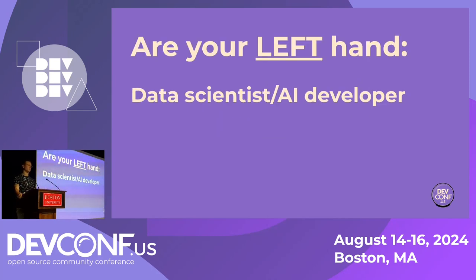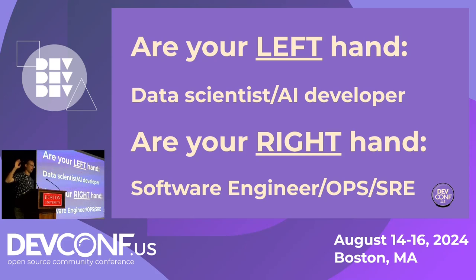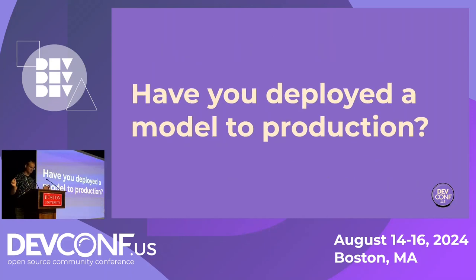Raise your left hand if you're a data scientist or AI developer. And raise your right hand if you're a software engineer or ops. Look around — people with left hand raised should talk to people with right hand raised. Talk to each other. And last question: have you ever deployed a model to production?